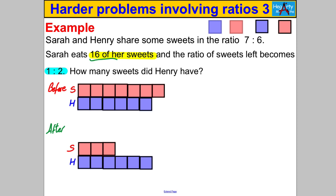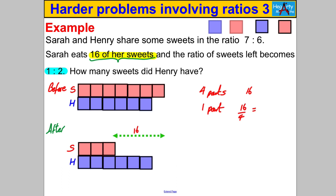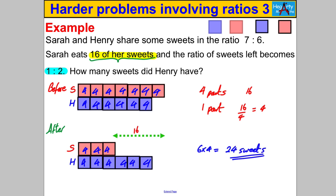Comparing the before and after situation really helps. We are told Sarah ate 16 of her sweets — that's the difference between the before and after. The change in Sarah's amount is 16, and she's lost four boxes. So four parts is worth 16; one part is therefore 16 divided by 4, which is 4. Henry originally had six parts: 6 multiplied by 4 is 24 sweets.